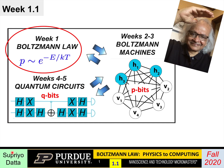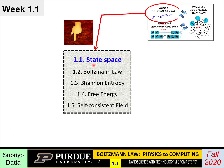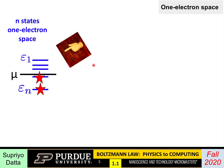Welcome to week one of our course, 'The Boltzmann Law: Physics to Computing.' This is the first lecture. Whenever we talk about any material — like an atom, a molecule, or a solid — we draw a set of energy levels. The picture we have in mind is that the electrons in that material can occupy these energy levels.